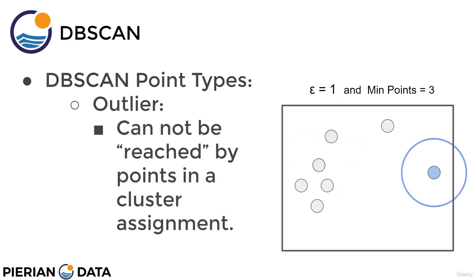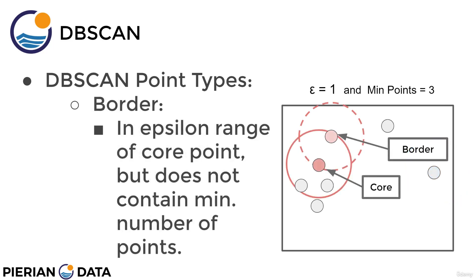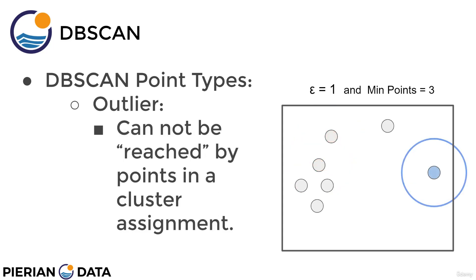Finally, the outlier point cannot be reached by any points already in a cluster assignment. As DBSCAN iterates through points assigning types — core, border, or outlier — core and border points within the same epsilon range end up assigned to the same cluster. But eventually you'll select a point that can't be reached by any core or border point in an existing cluster assignment. DBSCAN designates this as noise or an outlier — it's too far away to be part of any cluster. This means DBSCAN is automatically identifying outliers for you.